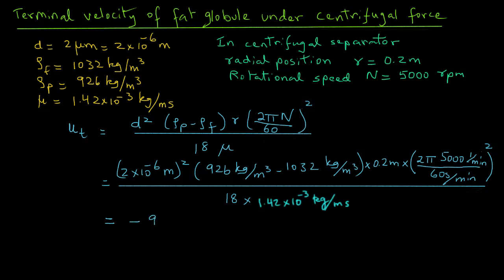Carrying out this calculation, we get −9.1×10⁻⁴ m/s. Converting to millimeters per hour: −9.1×10⁻⁴ m/s times 1000 mm/m times 3600 s/hr gives us −3274 mm/hr.